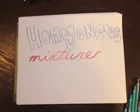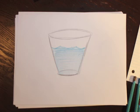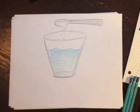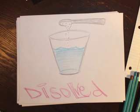Now, a homogeneous mixture is a mixture where the components that make up the mixture are uniformly distributed throughout the mixture. For example, sugar water. If you have a glass of water and then pour sugar into it, the sugar will dissolve and disappear. The sugar is still in the water, but is distributed thoroughly.